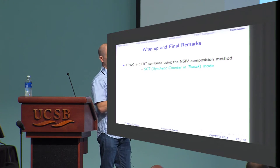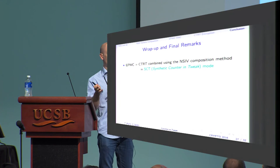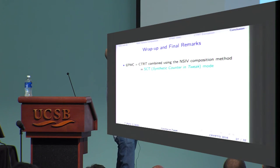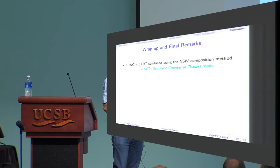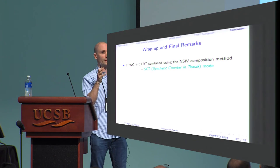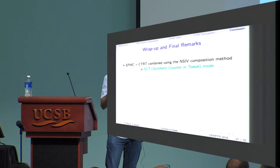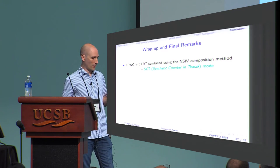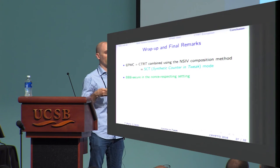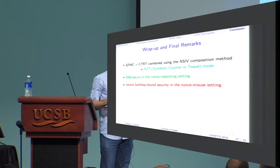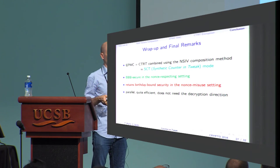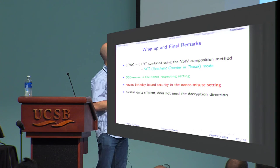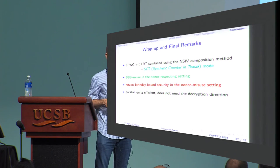To conclude: combining the authentication mode and the encryption mode using the NSIV composition method gives us the SCT mode — Synthetic Counter and Tweak. 'Synthetic' comes from SIV, because the initial counter is computed as a PRF of the nonce and the message. As explained, this mode is beyond birthday secure when nonces do not repeat, and retains birthday bound security in the nonce misuse setting. It's quite efficient, easy to parallelize, does not need the decryption direction, and is not online — though being online is impossible for nonce misuse resistance.